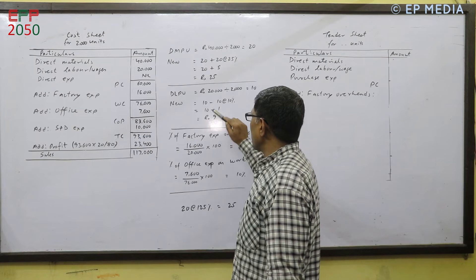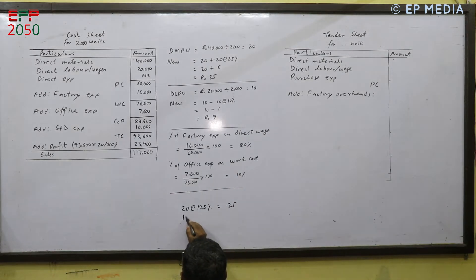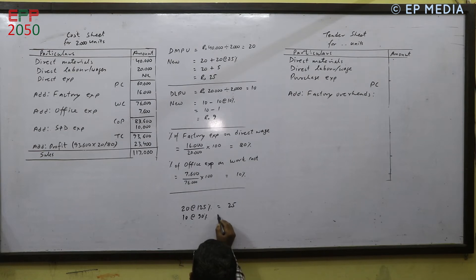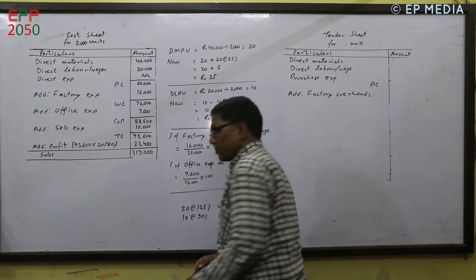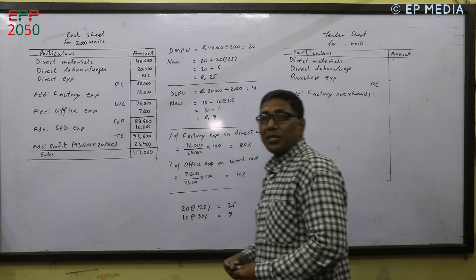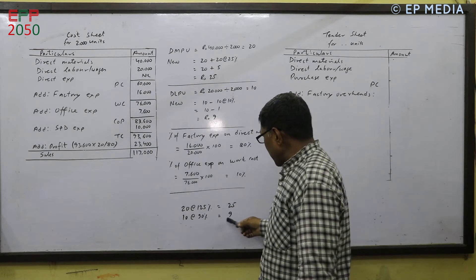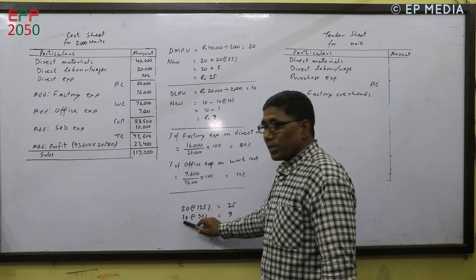We take less than 10 cents, at the same time we take less than 50 cents. This is the option of 10 cents, and we take less than 10 cents.